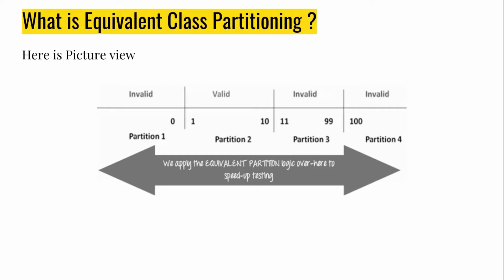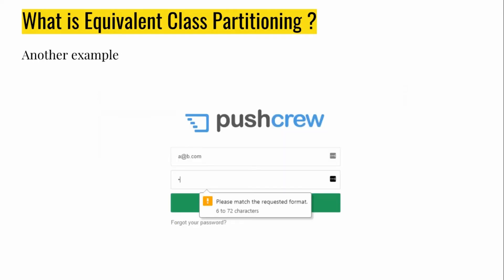Let's understand using the diagram. Anything between minus infinity to zero is an invalid test case — that is one partition. 1 to 100 is a valid partition. 101 to 999 is invalid, and anything after that is also an invalid partition. So we have divided into three chunks. We are not testing the boundary values here — that was discussed in the first tutorial. Here we are just concerned about the partitions, which provide 100% coverage.